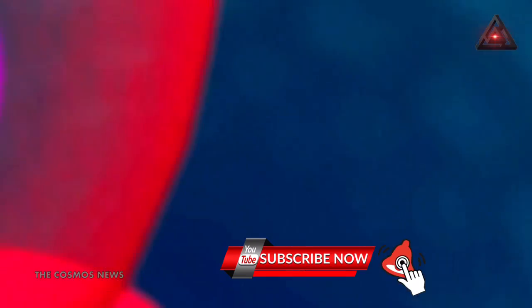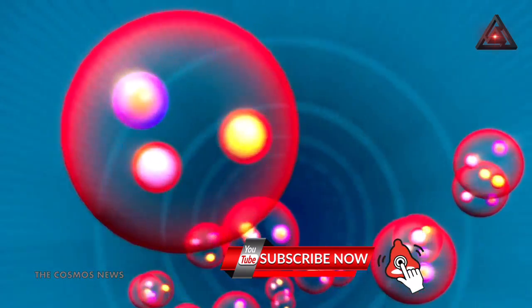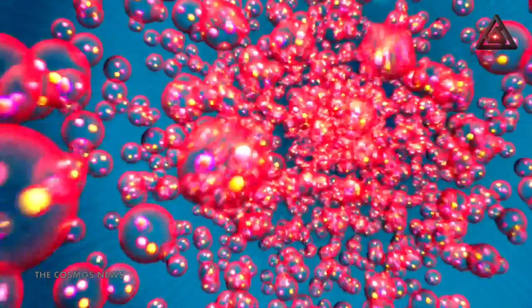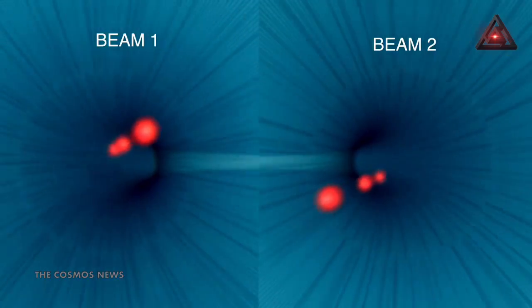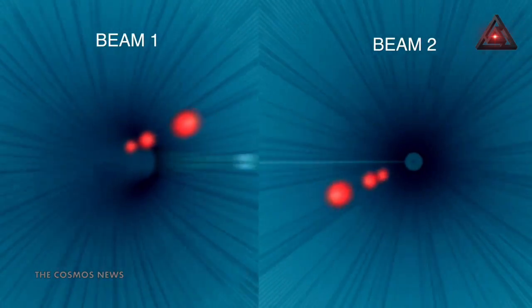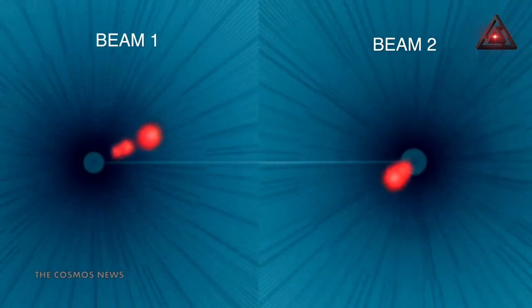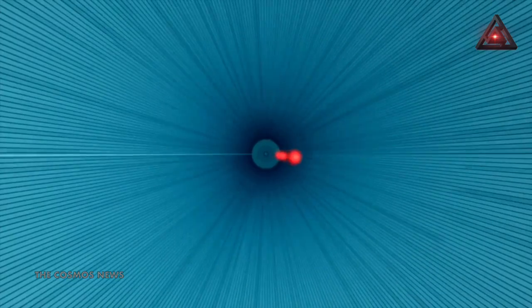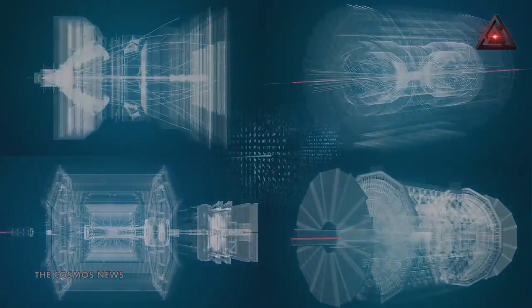We will put in collision for the first time in the LHC protons at an energy record of 6.8 tera electron volts per beam. At this energy, the collision will be at 13.6 tera electron volts. This will be a very nice record for the experiment.